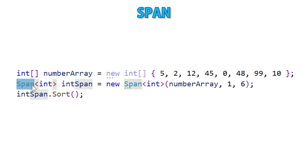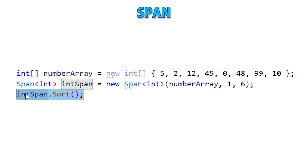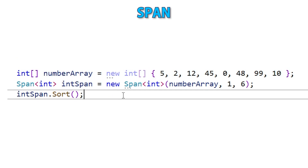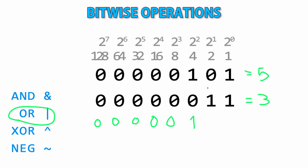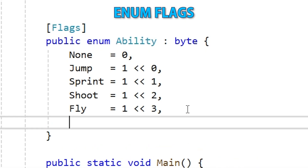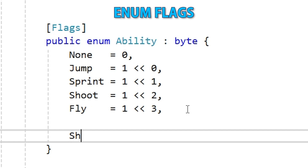Next we'll see a lecture on Span — a super efficient way to do logic on arrays or slices of arrays. Importantly, it does not create any new data, costs no new memory, creates no new object; it's basically just a pointer, meaning it is insanely performant. Then a lecture on bitwise operators, covering how to work with individual bits of data, including the basics of how binary works. Next, enum flags — how you can turn your enums into bitmasks, allowing you to make some interesting combinations.